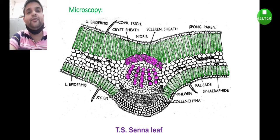Then unicellular covering trichomes and presence of paracytic stomata. These three are considered as the characteristic features of the microscopy of Senna leaf. In brief, Senna is an example of ISO bilateral leaf because at both surfaces, upper epidermis and lower epidermis, the cellular arrangement is the same.